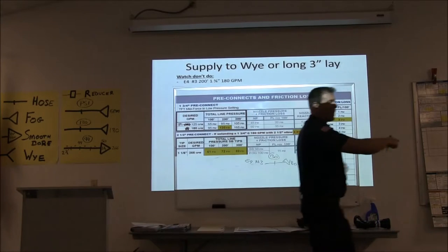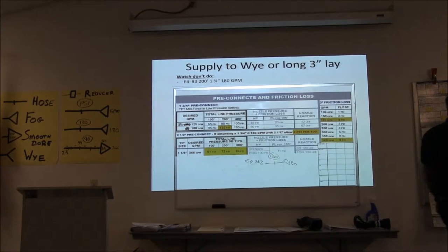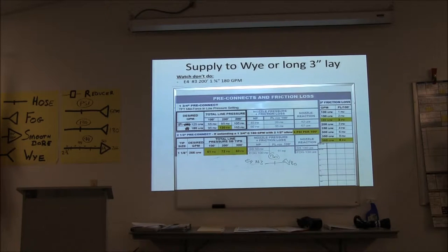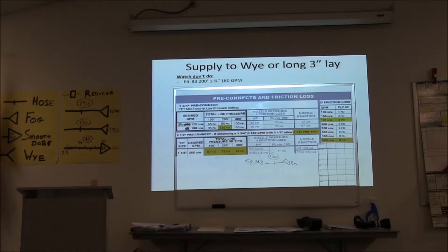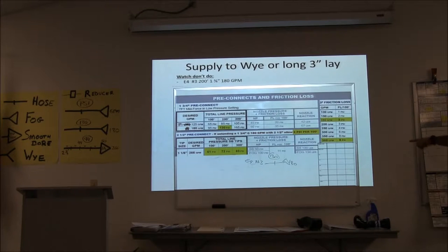I come over and mark my gauge at 130, draw a quick image so I know which one is my pre-connect, and start pulling my line. Then I come back to the pump table — this is where we catch mistakes. Teaching this in the DO Academy over and over, this is where people catch their mistakes.